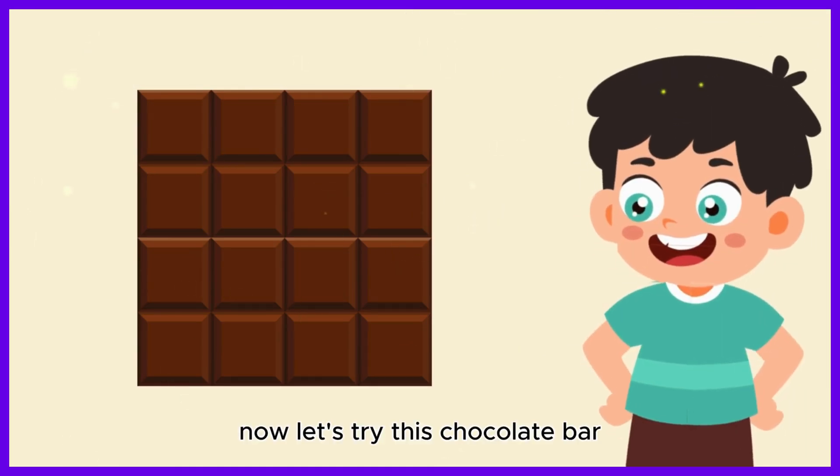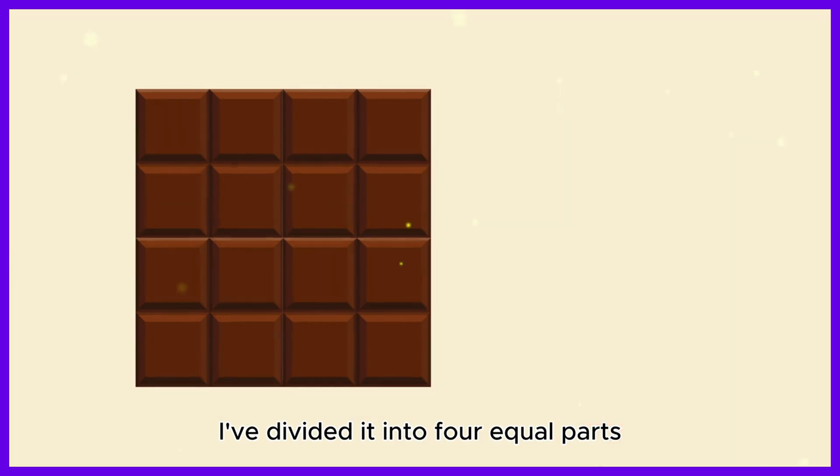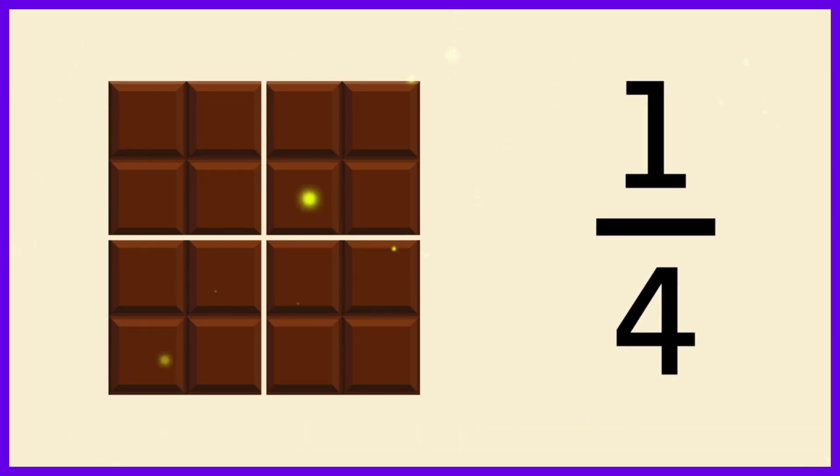Now, let's try this chocolate bar. I've divided it into four equal parts. Each part is called a quarter or one-fourth. Can you say that? One-fourth.